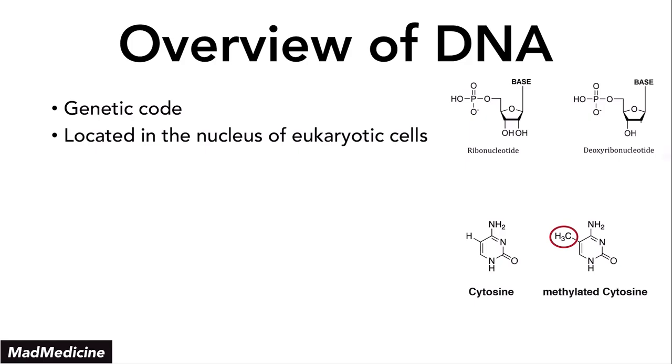So keep in your brain: DNA, nuclei, eukaryotic cells. This is just the basics we're talking about. And DNA is a polymer of nucleotides.